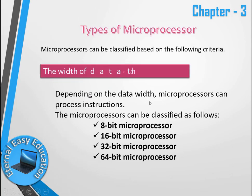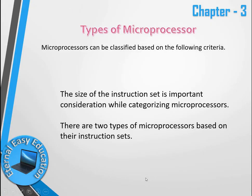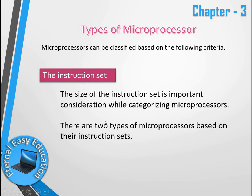Depending on the data width, a microprocessor can process instructions and may be 8-bit, 16-bit, 32-bit, or 64-bit. It started as 8-bit and has been improved to 64-bit. Based on this, a microprocessor is referred to as an 8-bit, 16-bit, 32-bit, or 64-bit processor.